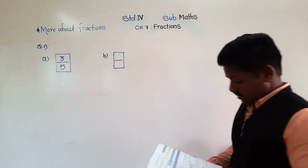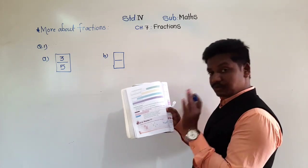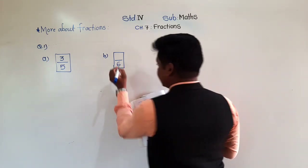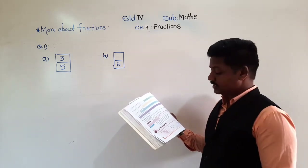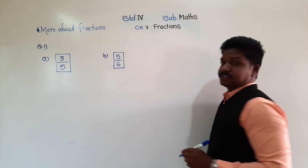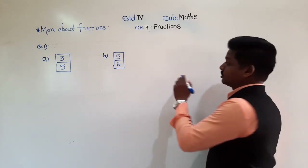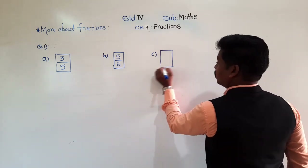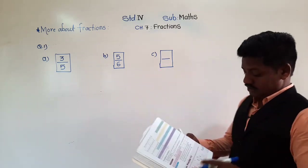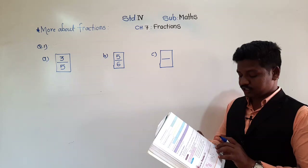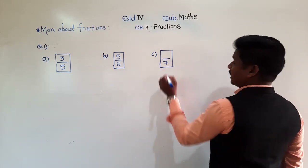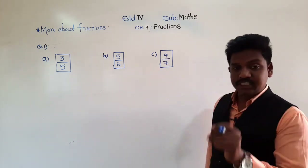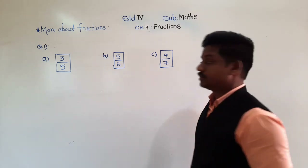For 1B, some equal circles are given. Count total circles: 1, 2, 3, 4, 5, 6 — so 6 goes below the bar. Out of 6 equal circles, how many are shaded? 5 are shaded. So 5 sixths is the fraction for that shaded part. For 1C, count the equal parts: 1, 2, 3, 4, 5, 6, 7 — there are 7 equal parts. And out of 7, how many are shaded? 4 are shaded. Write 4 above the bar. In this way we write the fraction for the shaded portion of each figure.